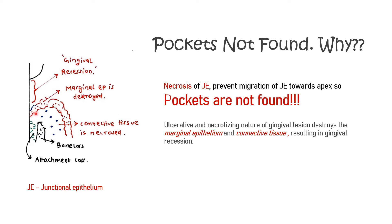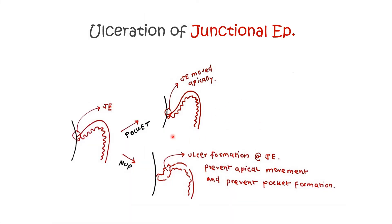The junctional epithelium undergoes necrosis, and the marginal epithelium connective tissue also undergoes necrosis and ulceration, resulting in gingival recession such that pockets are not formed. For a pocket to form, the junctional epithelium must move apically; but if there is ulceration of the junctional epithelium, it prevents apical migration, so pockets won't form. This is why in NUP, no pockets are found.